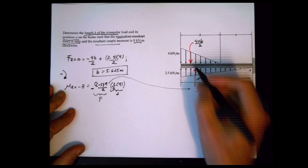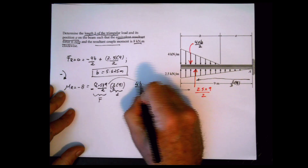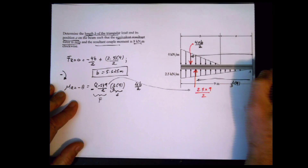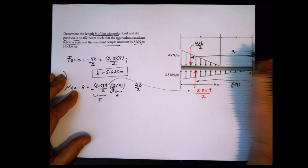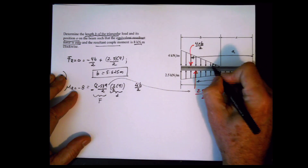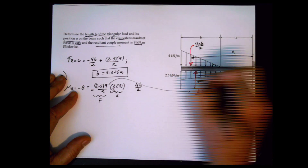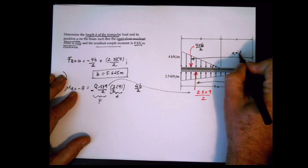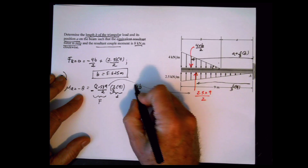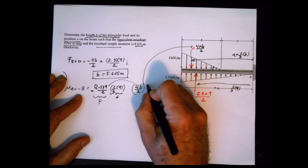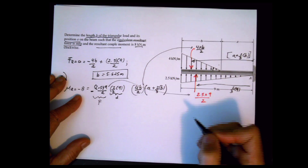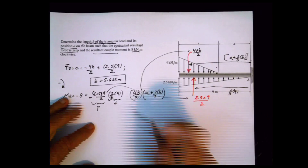The other force is 4b divided by 2, and what I need is its location from point a. This distance from the acute angle is 2/3 of the base b, so the total distance from point a is a plus 2/3 of b. That force multiplied by the distance a plus 2/3 of b — if you apply the rotation, it goes counterclockwise, which per our convention is positive.